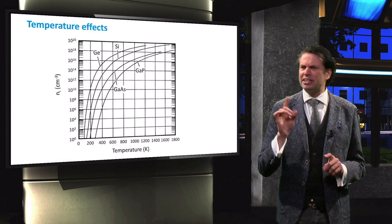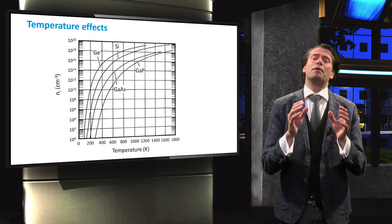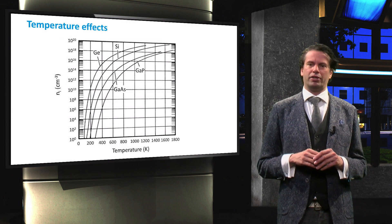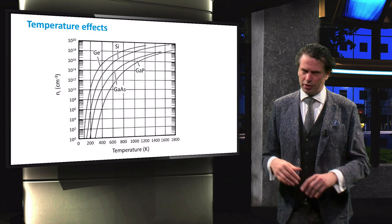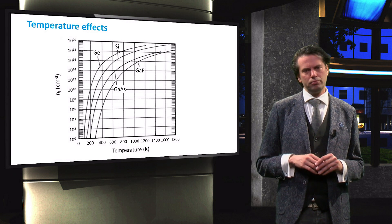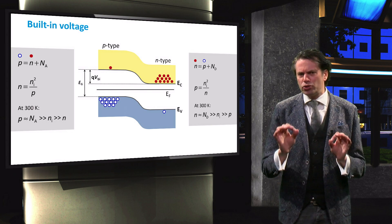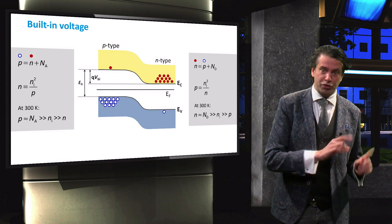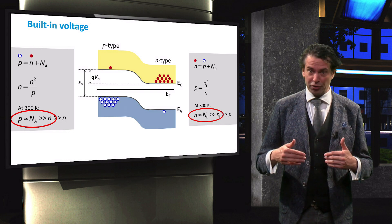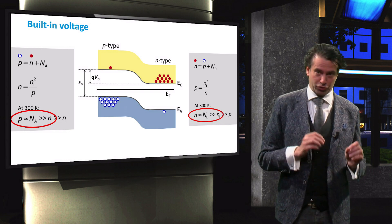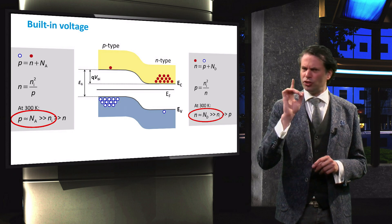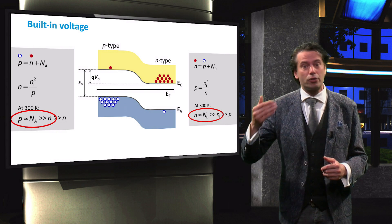What happens if we increase the temperature? An increase in temperature means that more thermal energy is available, and a larger number of electron and hole pairs will be thermally generated. This is shown in this graph, where the intrinsic carrier concentration of various semiconductor materials increases strongly with increasing temperature. If the intrinsic carrier concentration increases, both the electron and hole concentration will increase. However, since the dopant concentration for moderate temperatures is generally much larger than the intrinsic carrier concentration, the majority charge carrier increase will be insignificant.